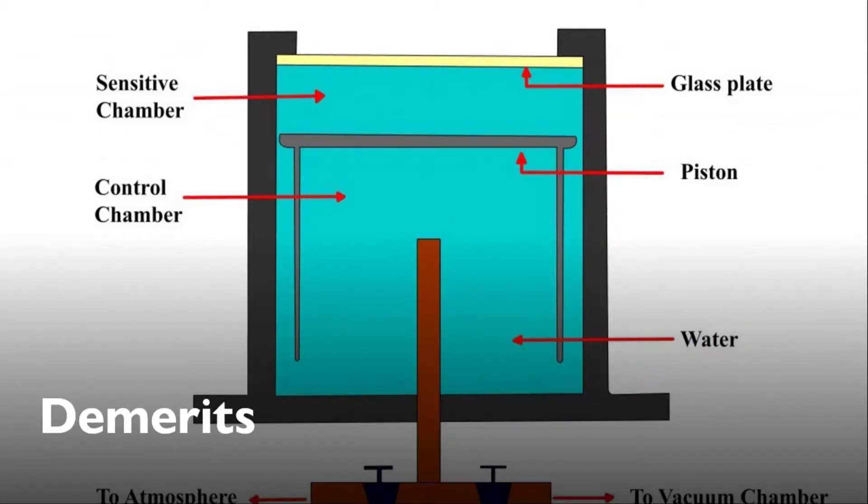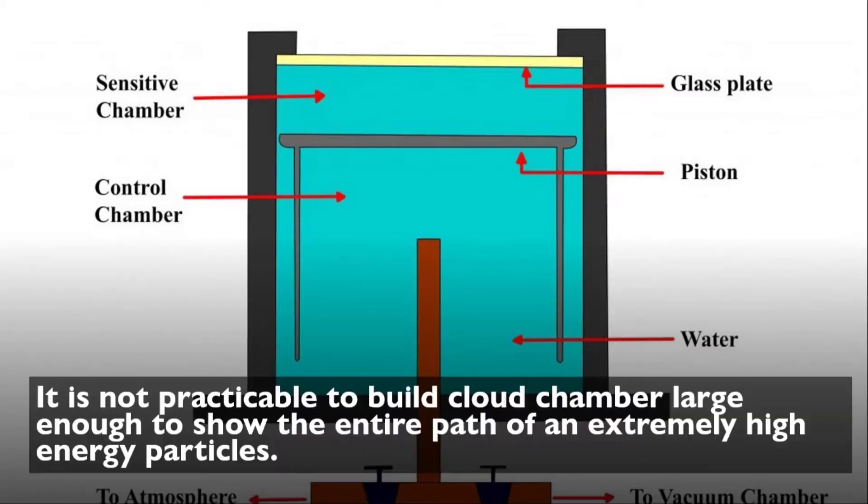Wilson cloud chamber has many demerits. It is not practically practicable to build a cloud chamber large enough to show the entire path of an extremely high energy particle. It is a very small chamber not able to show the entire path, only some of the path.